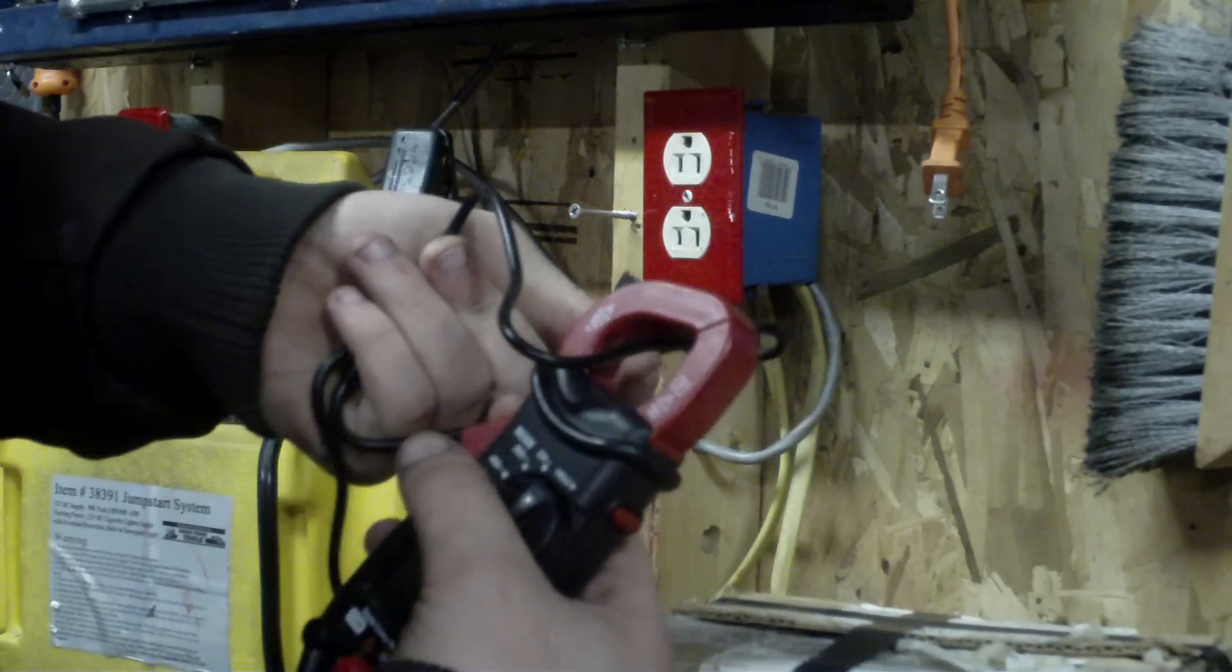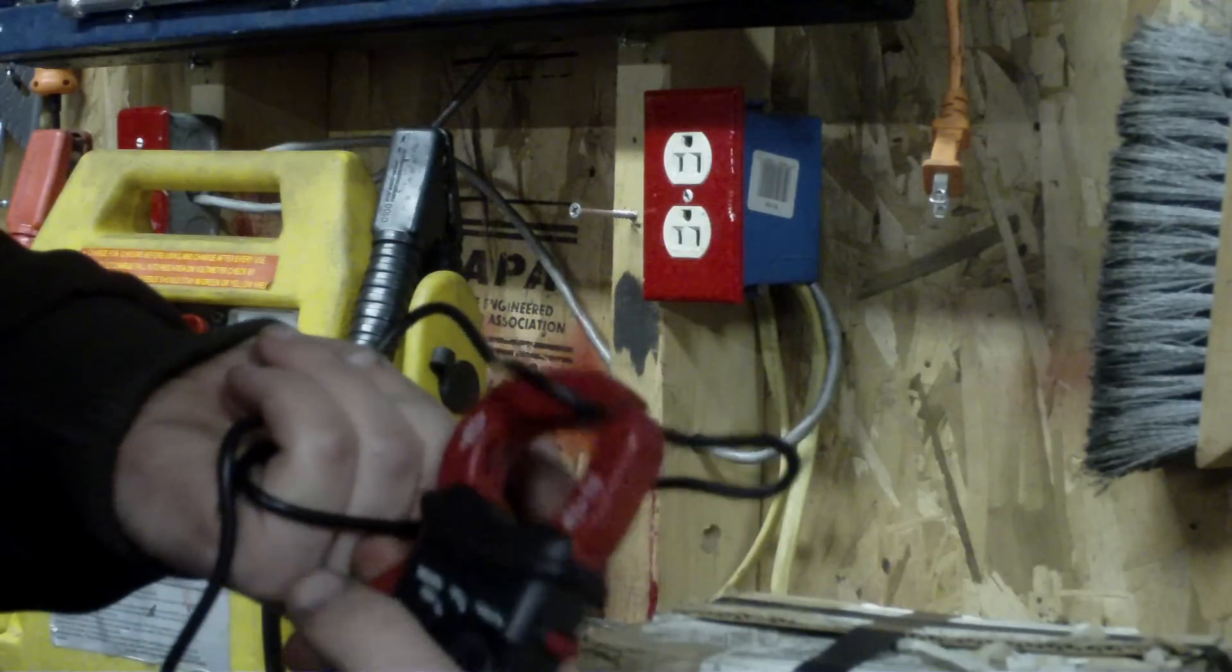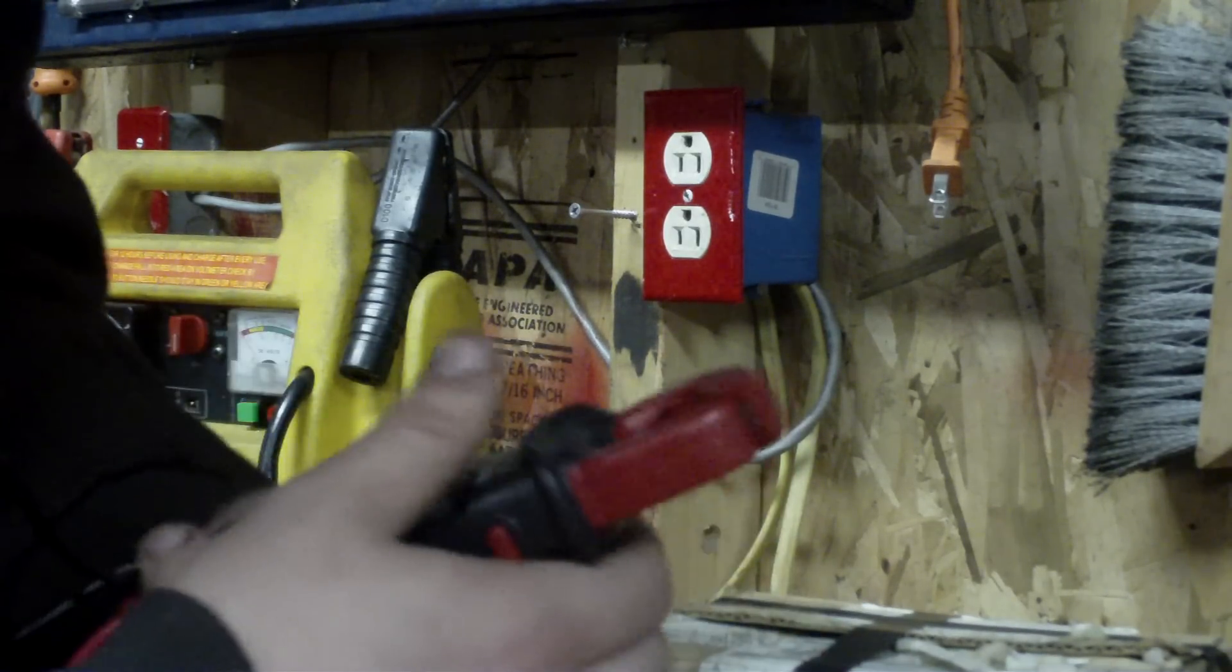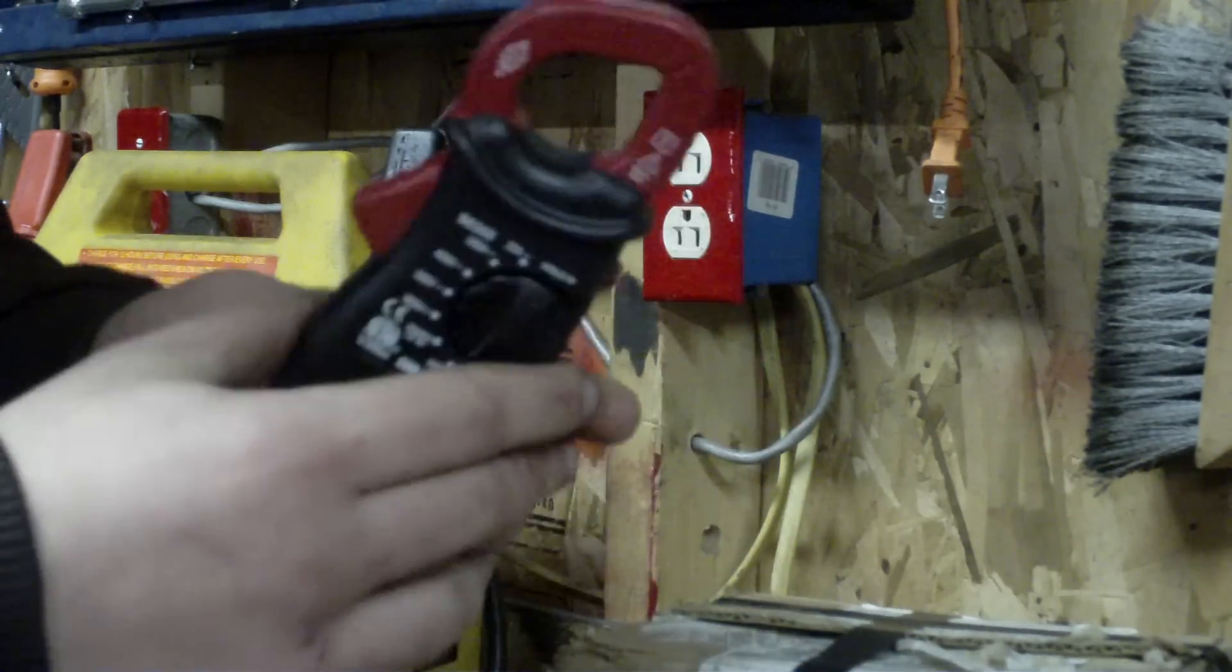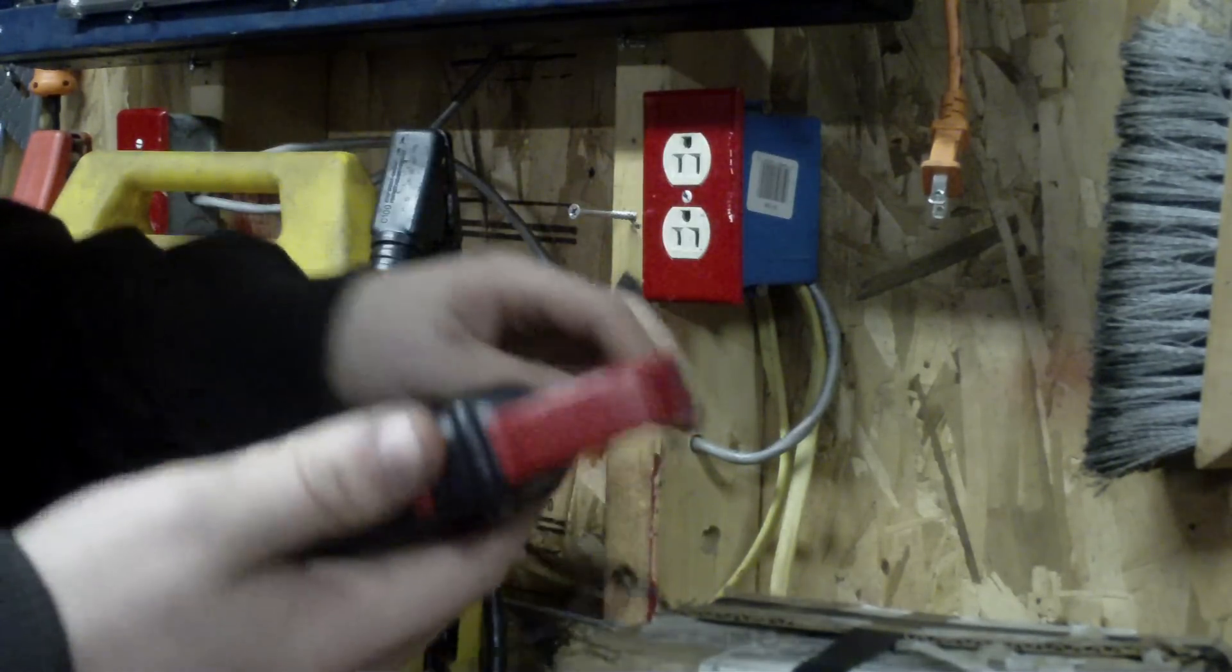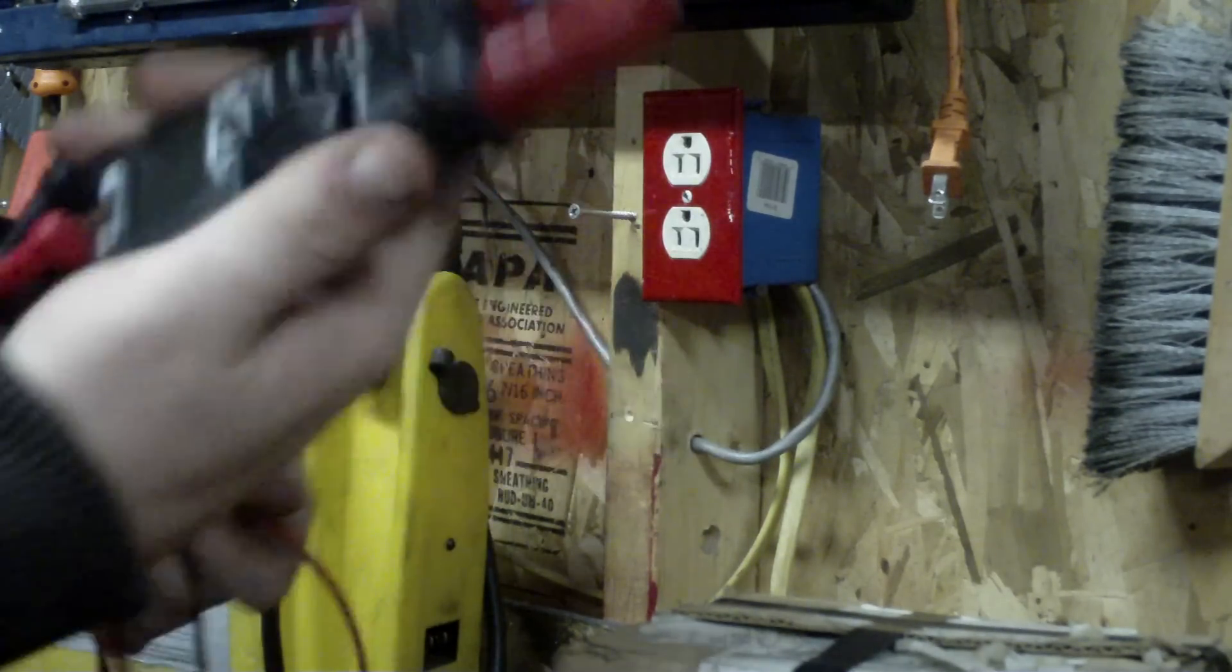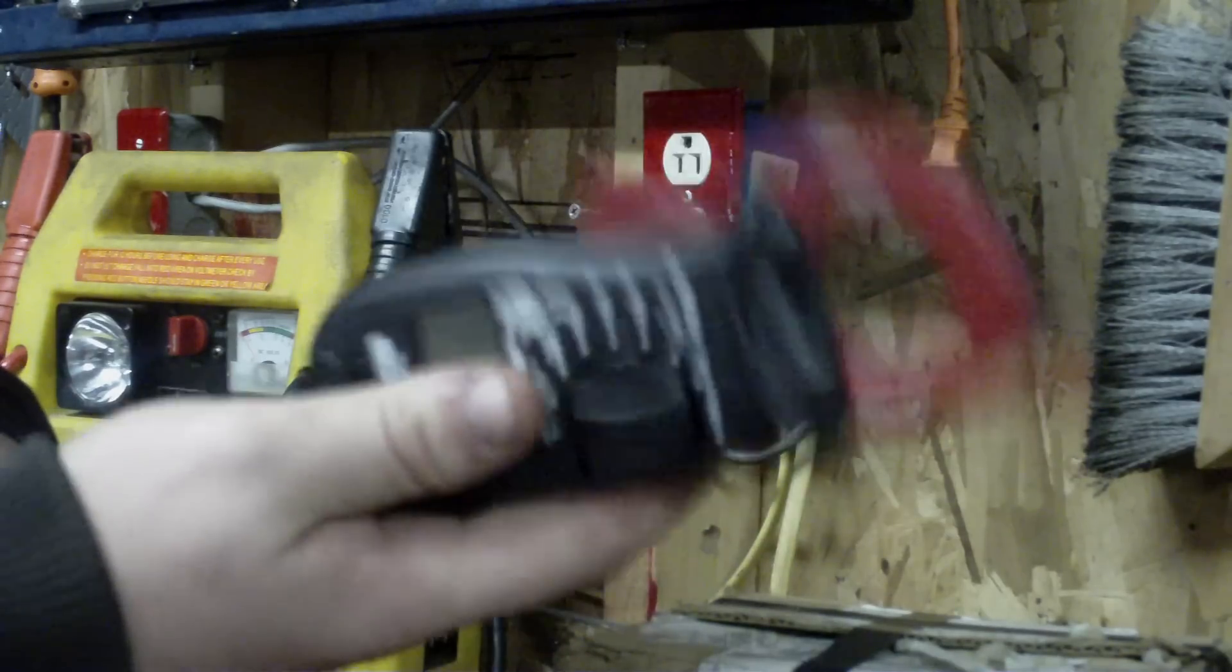You can put it on the wire like this. Some people think you put it like this, clamp it on there like that, you don't do that. You put it in the middle like this. What it does, it acts like a transformer. You can see inside here, it's got the laminated metal, like a transformer cord. It detects the magnetic field around the wire. These come in really handy, and these are for AC only, these don't work on DC.